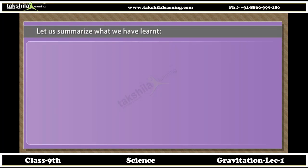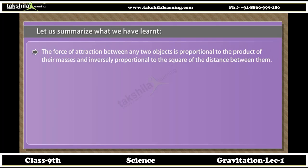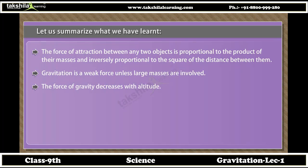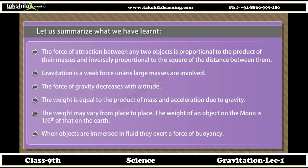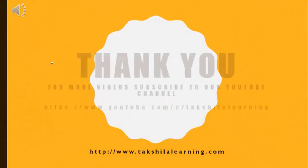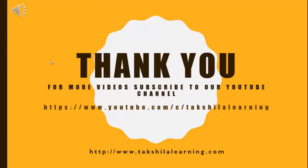Summary: the force of attraction between any two objects is proportional to the product of their masses and inversely proportional to the square of the distance between them. Gravitation is a weak force unless large masses are involved. The force of gravity decreases with altitude. Weight equals mass times acceleration due to gravity and may vary from place to place; the weight of an object on the moon is 1/6th of that on earth. When objects are immersed in a fluid, they experience a buoyant force. Thank you for watching this video; please subscribe to our YouTube channel.